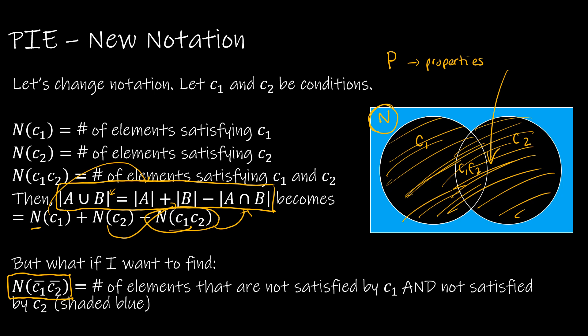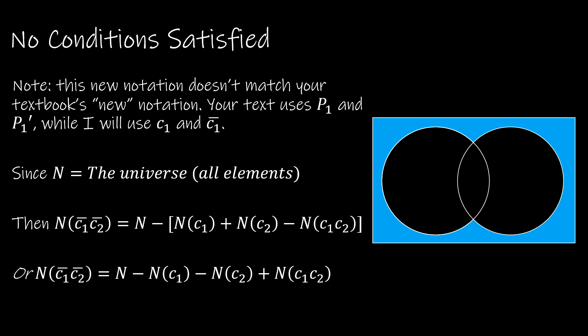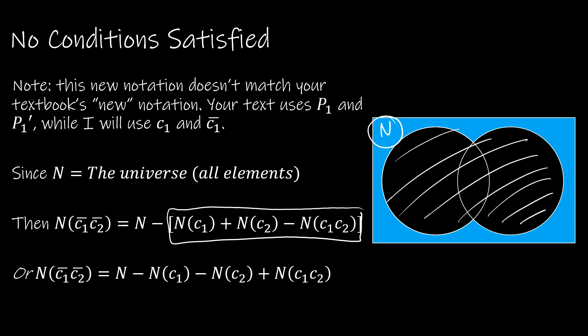Going back to the way your textbook shows this: P1-prime would be equivalent to my notation with a complement bar over C1. Both are just different ways to show the complement — meaning P1 is not met, or C1 is not met. So N is the universe of all elements, and we use what we found before. The whole segment inside the Venn diagram gives us the union, and then we're left with anything not met in any of those sets.